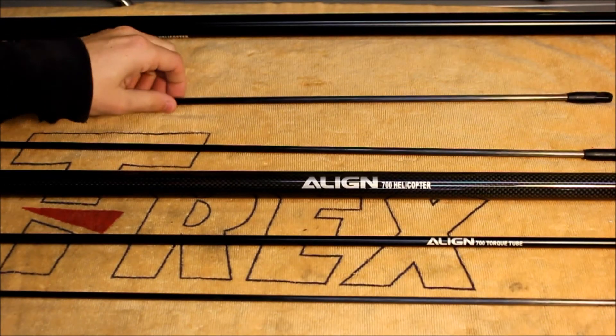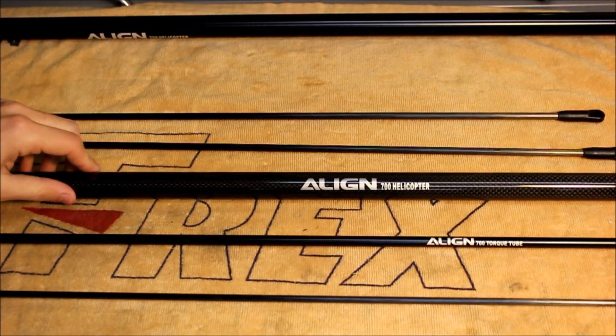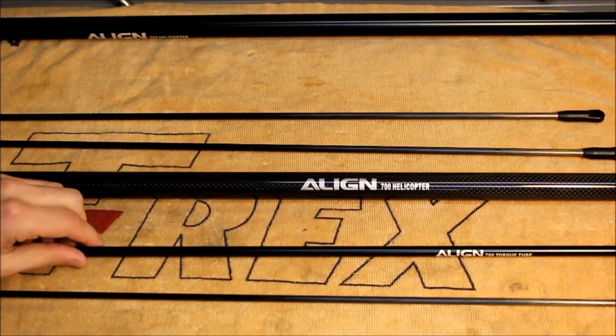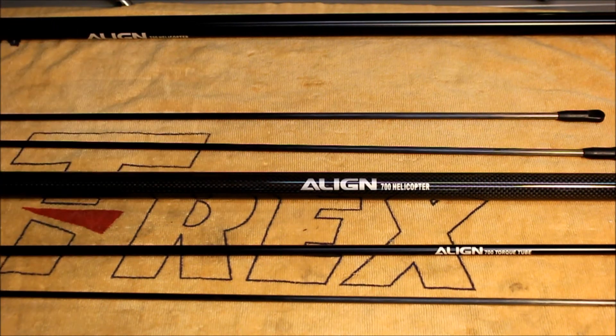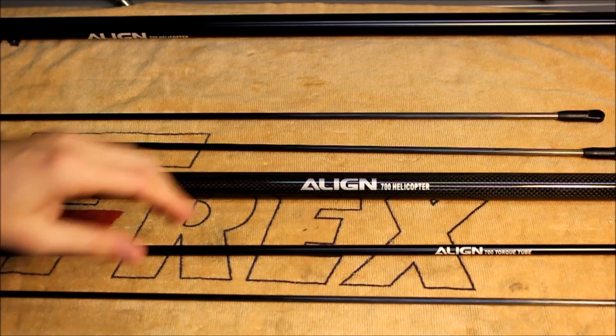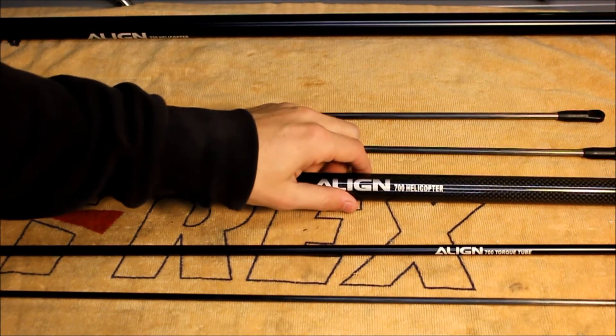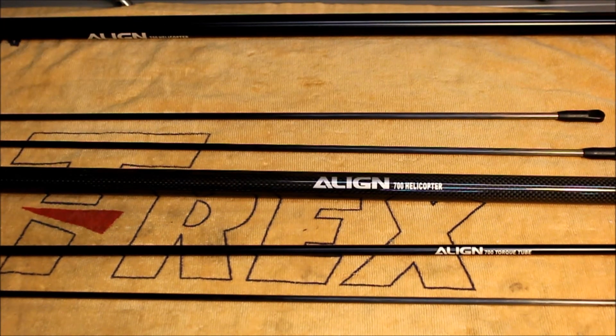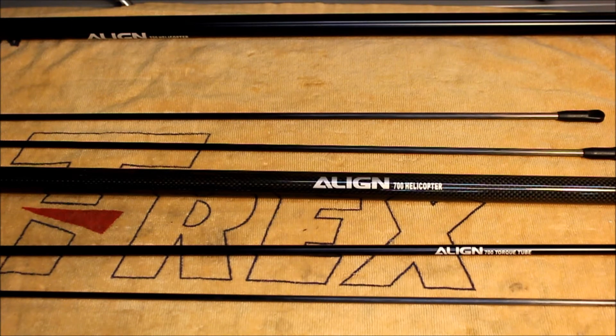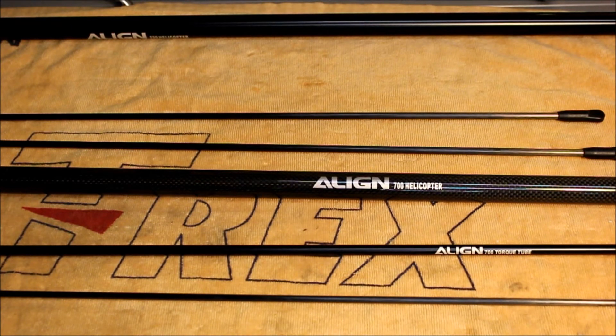To assemble this part of the build we need our two tail boom supports, the tail boom, our torque tube which is going to be supported by two bearings housed in a rubber sleeve. The sleeve is what's going to center the torque tube in the tail boom. To push the rubber sleeves through the tail boom you'll want to lube them up a little bit with some WD-40, some LPS or even the clear silicone line grease that comes with the kit.